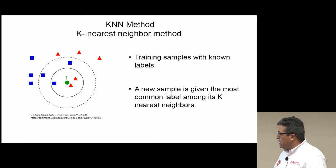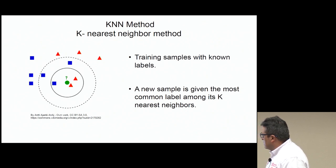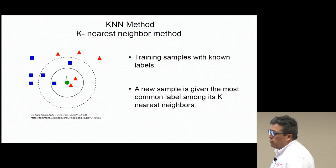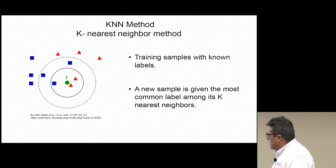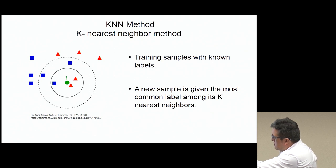In this example, we have two labels: the red triangle and the blue square. We have a sample which is unknown. With K equal to three, we look at the three nearest neighbors, and the most common label is the red triangle. Therefore, this new sample — the green circle — will be given the red triangle label.